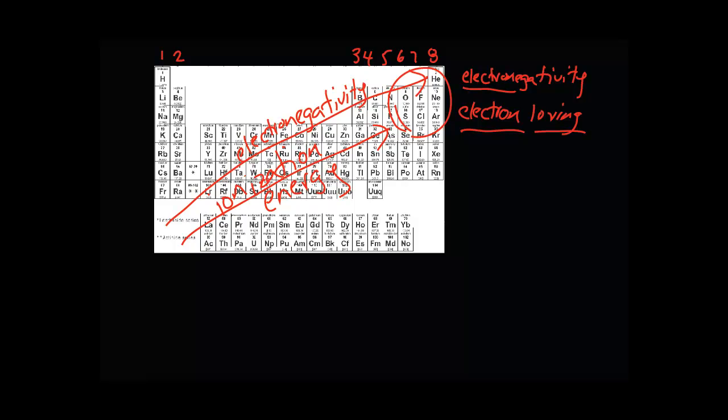Bottom left to top right: electronegativity increases, ionization energy increases. But there's something that decreases as you go from top right to bottom left—it goes the opposite way.